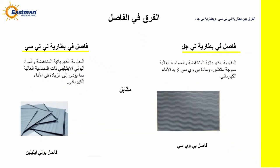Difference in Separator. The separator in TTC battery is low electrical resistant and high porosity polyethylene material, which leads to an increase in electrical performance. While the separator in T-Gel battery is low electrical resistant and high porosity corrugated sintered PVC material, which also increases electrical performance.